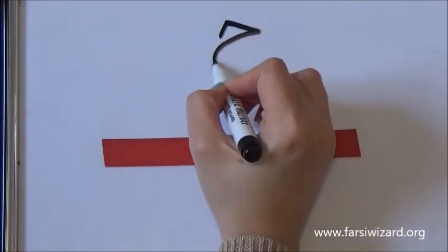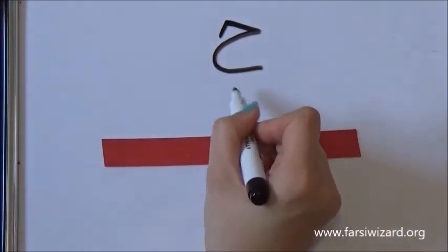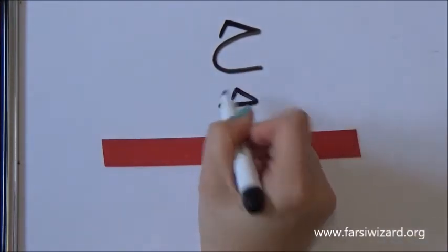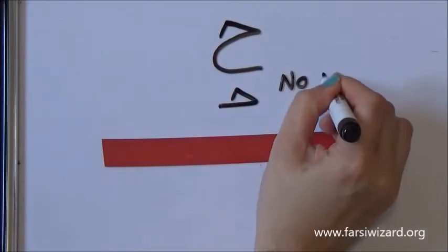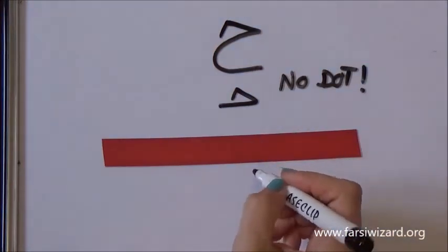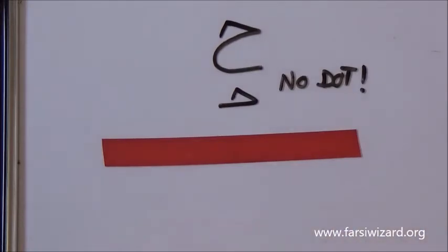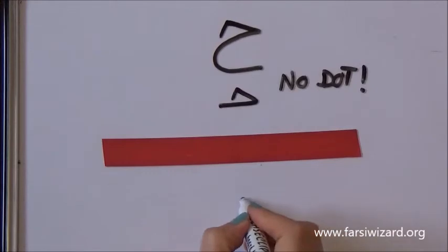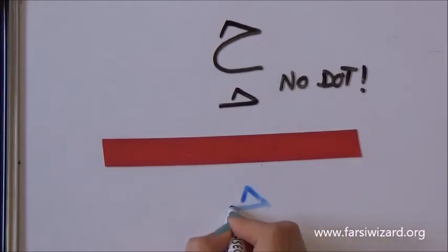The next one that I'm going to show you is simply just this shape that you saw at the beginning. This time, there is no dot. Yay! Nothing to remember. So, the letter which has no dot and is written like this is the equivalent of H in English. So, the sound is HE. HE. Right?